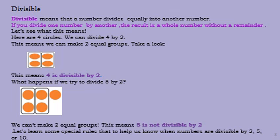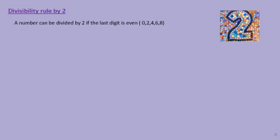Without sketching circles and trying to make them in groups, let us learn some special tricks to know when numbers are divisible by 2, 5 or 10. The divisibility rule for 2: a number is divisible by 2 if the last digit, the ones digit, is even. Even means the ones digit is 0, 2, 4, 6 or 8.